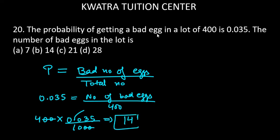That means we have 14 number of bad eggs in the lot. So yes, option B is correct.